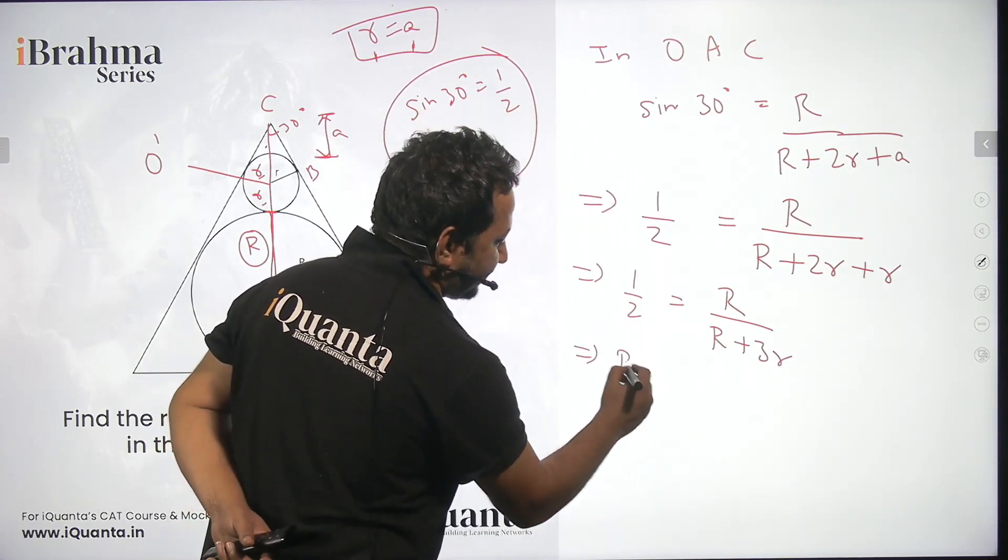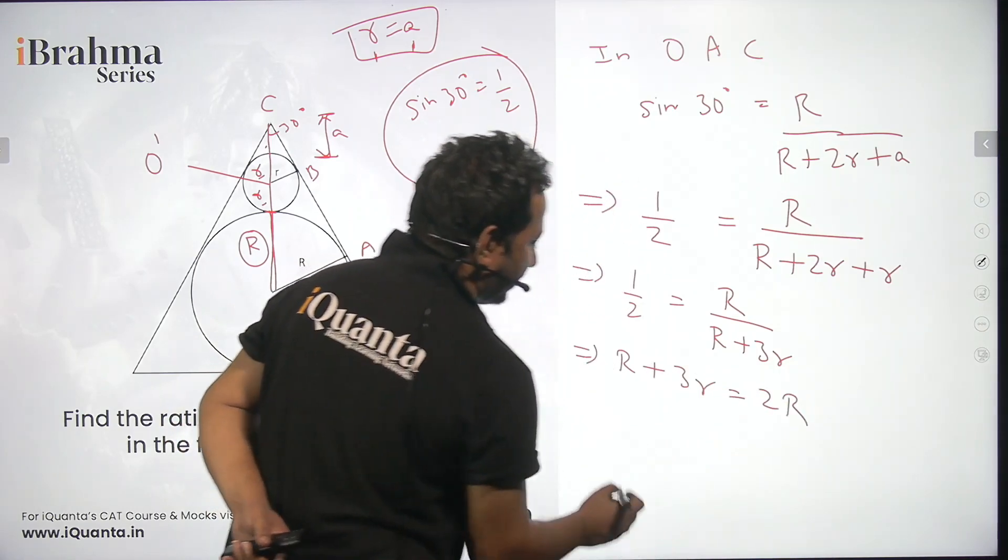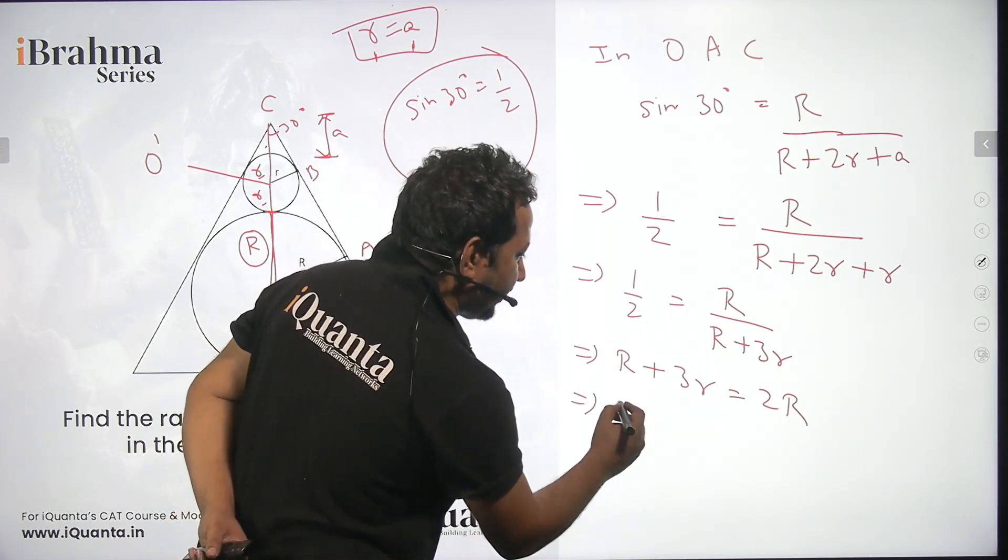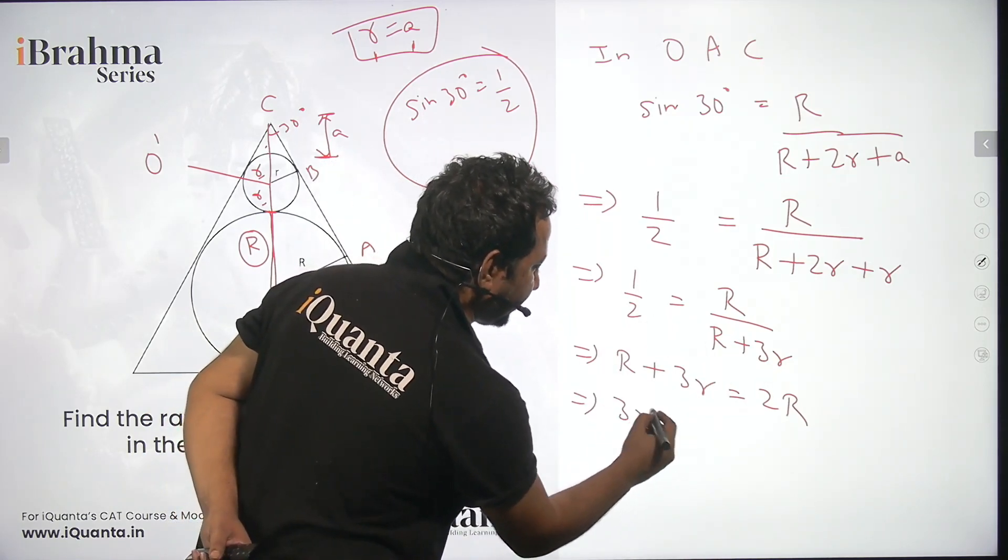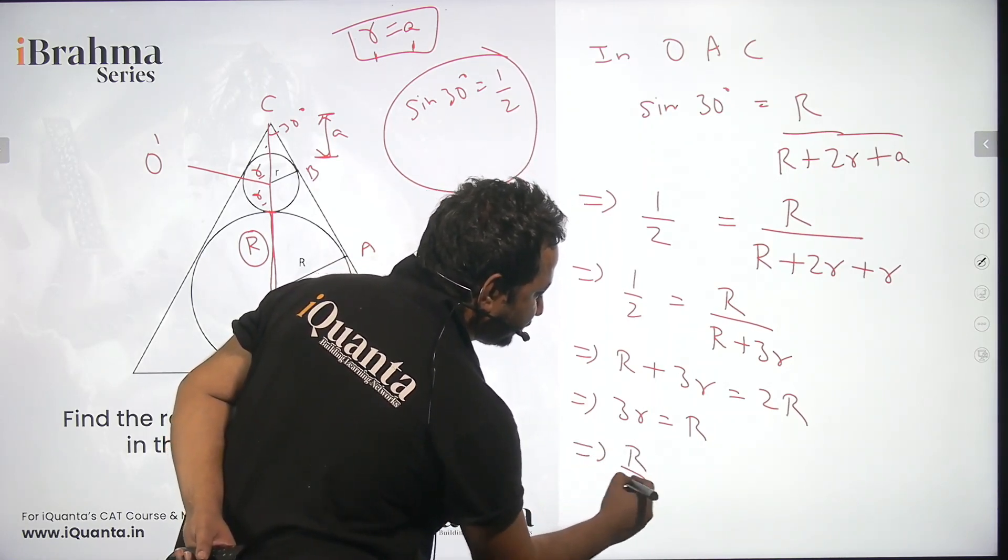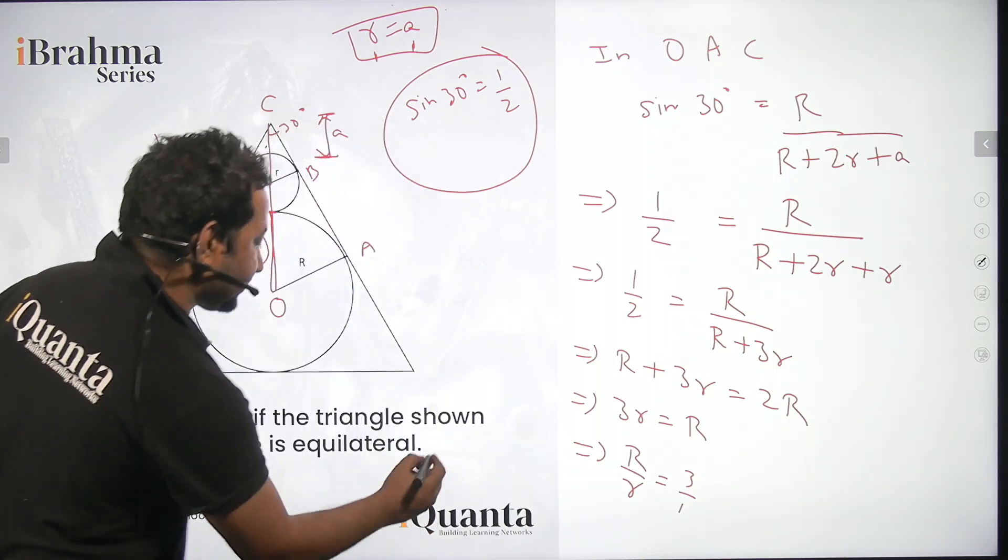Cross multiplying I'll get capital R plus three r is equal to two times R. Sending this R on the right hand side I get three r is equal to capital R and now we can find the ratio, that is three upon one. So our answer is three is to one.